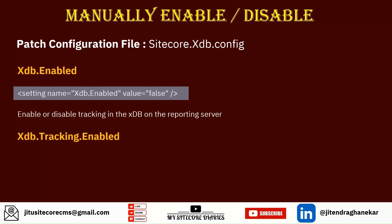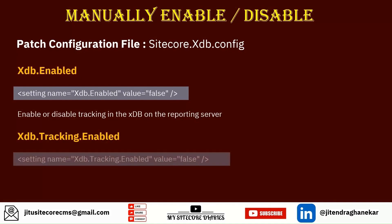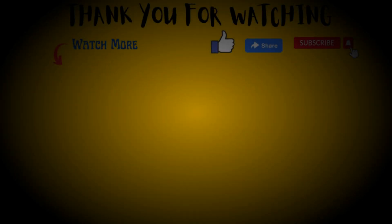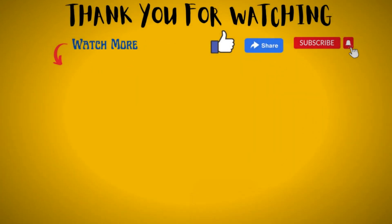Another property is called xdb.tracking.enable. You can make it true or false. If you enable it, it will enable tracking on the content management and content delivery servers. So xdb.tracking.enable is for the content management and content delivery, whereas xdb.enable is for the reporting server.